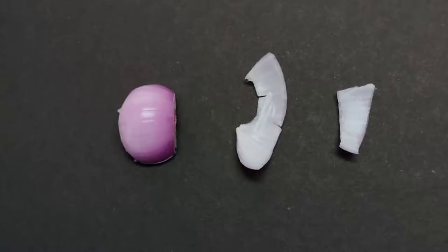Peel and cut out a long strip of onion so that the thin film-like white epidermal cell layer can be accessed.